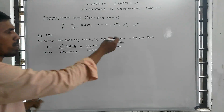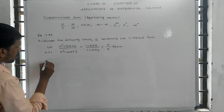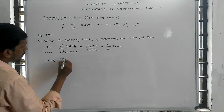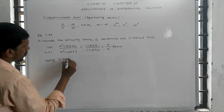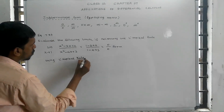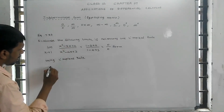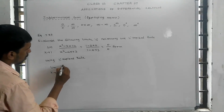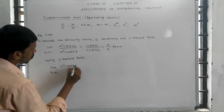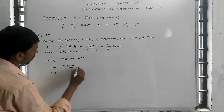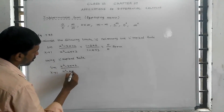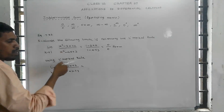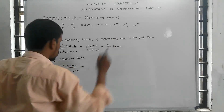By using L'Hôpital's rule: the limit as x tends to 1 of x squared minus 3x plus 2, divided by x squared minus 4x plus 3, equals the result after applying L'Hôpital's rule.